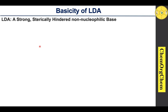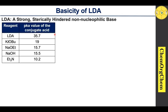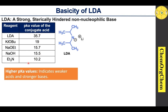Let's move on to the basicity of LDA. LDA is one of the strong and sterically hindered non-nucleophilic bases. The pKa scale will be useful to describe the basicity of LDA. I have tabulated some common bases and their pKa values of the conjugate acid. The higher pKa value indicates a stronger base and weaker acid. The pKa of LDA is 35.7, therefore it is absolutely one of the strongest bases.